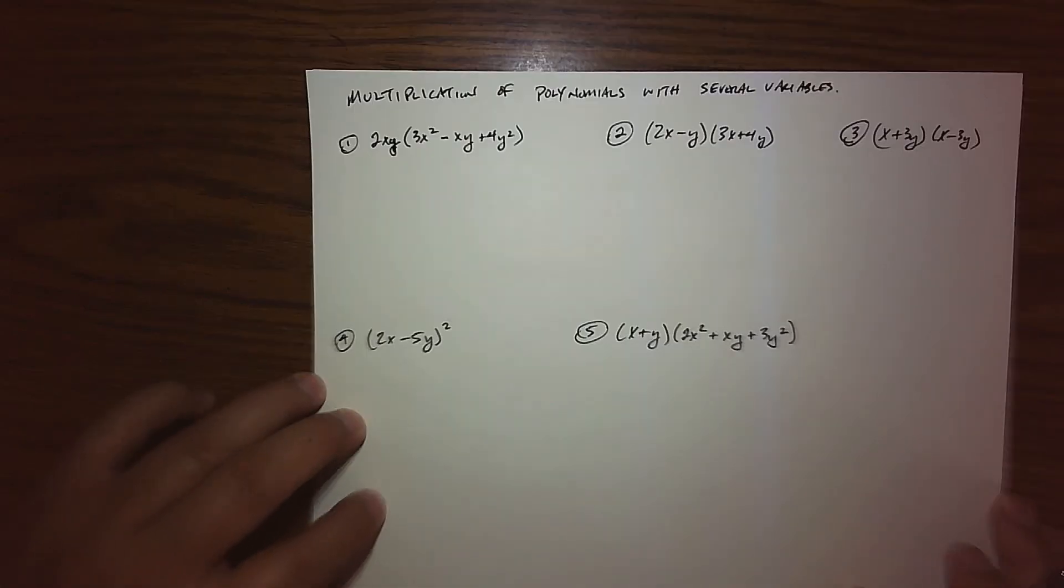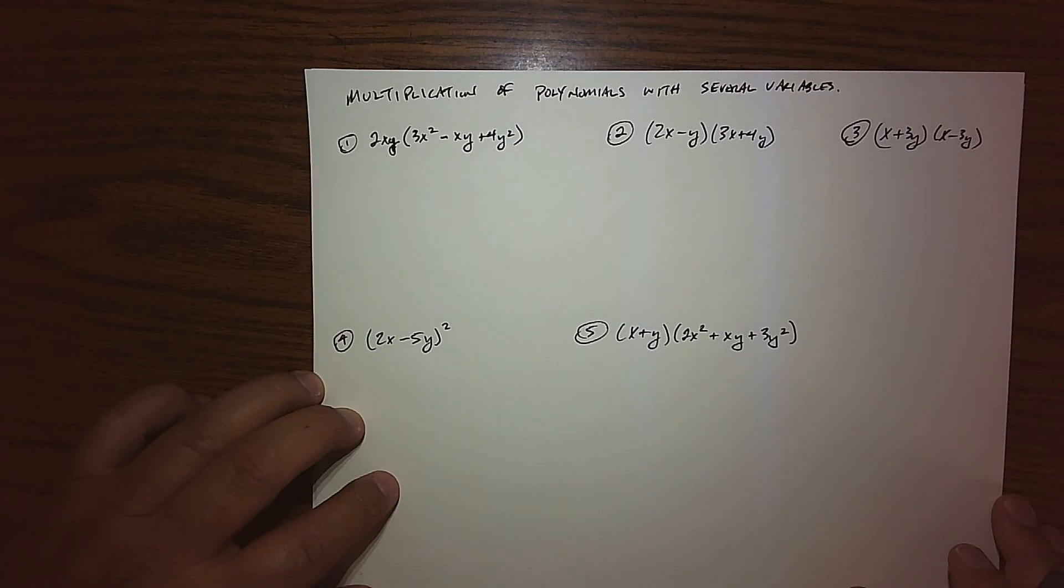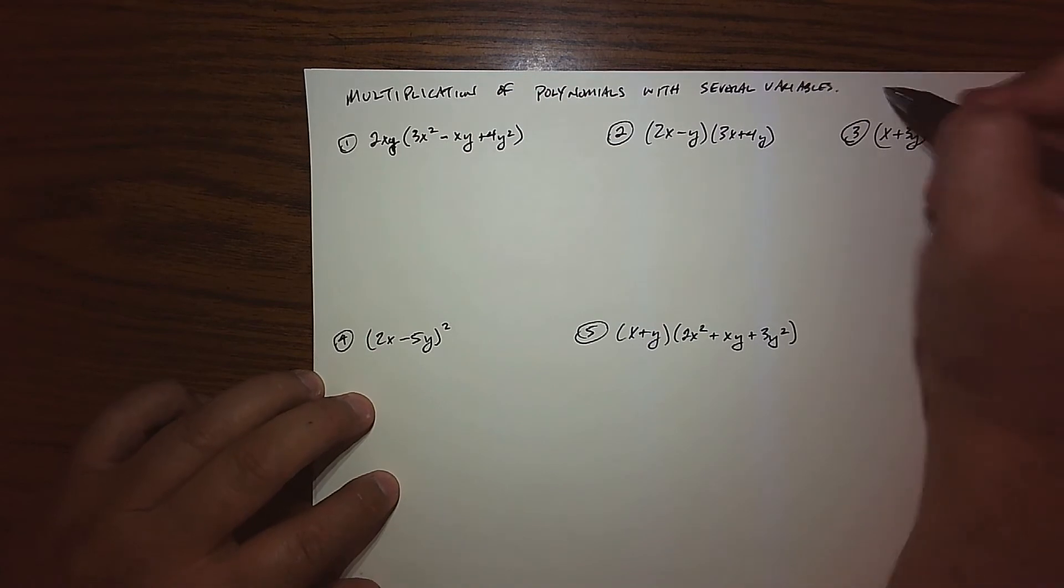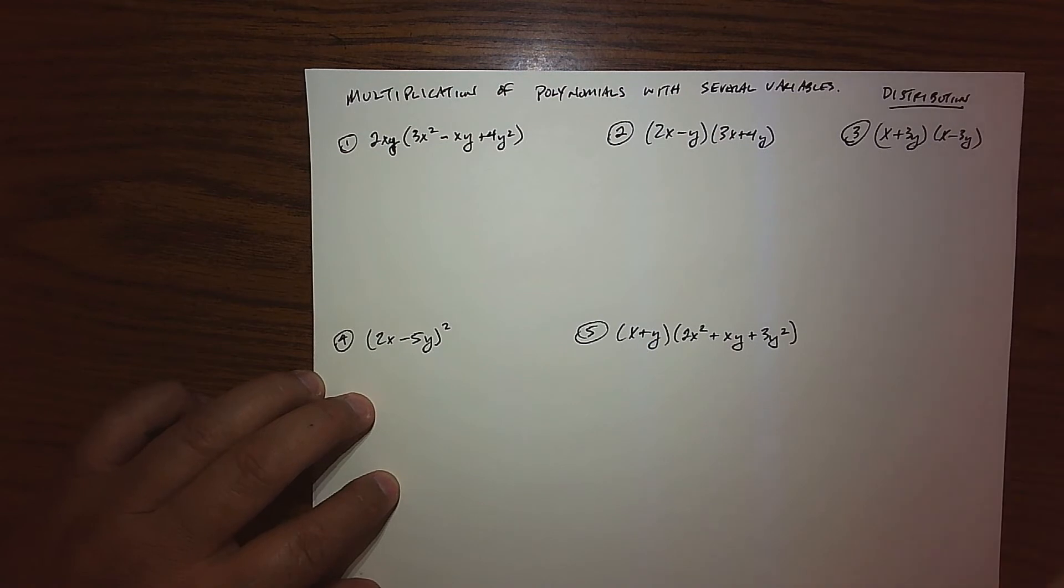Okay, so now on to multiplication of polynomials of several variables, and the key word again is distribution, because that's basically what we do term by term. So nothing should change if we have more variables.